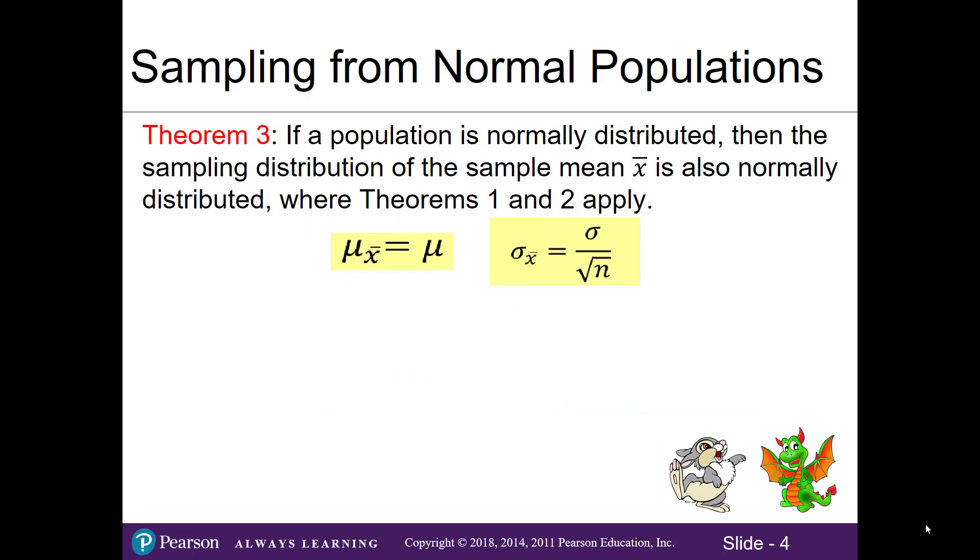Theorem 3 states that if a population is normally distributed, meaning it's bell-shaped, then our sampling distribution of our sample mean is also normally distributed or bell-shaped. This allows us to apply theorem 1 and theorem 2 regarding our mean and standard deviation of the sample means or standard error.